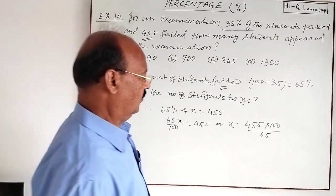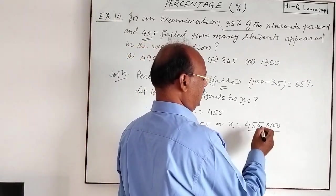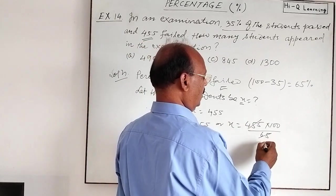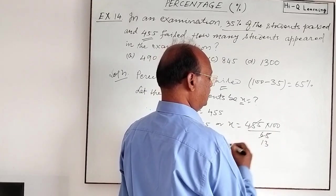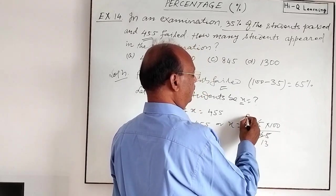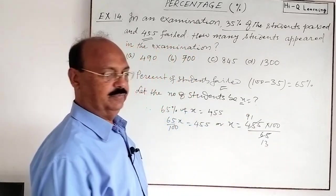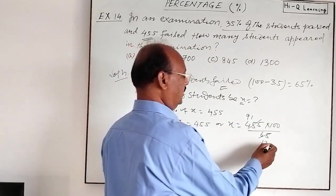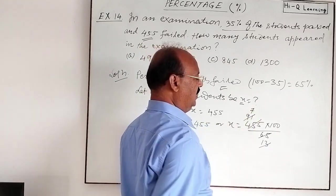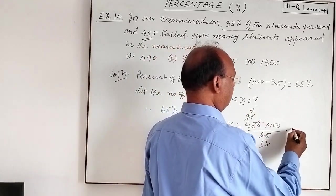Let us cancel with 5. 455 divided by 5 is 91, and 65 divided by 5 is 13. So we get 91 times 100 divided by 13, which equals 700.